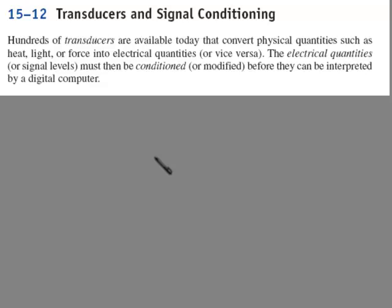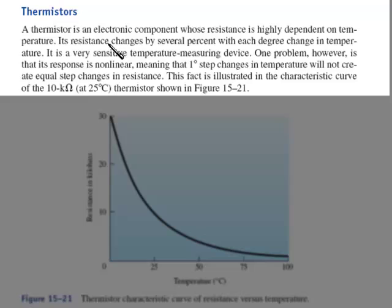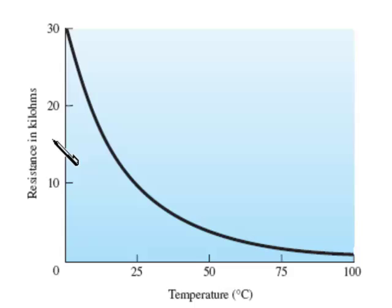So the first sensor we'll look at is the thermistor. This is an electronic component whose resistance is highly dependent on temperature. Its resistance changes by several percent with each degree change in temperature. It's a very sensitive temperature sensing device. One problem, however, is that its response is non-linear, meaning that one degree step changes in temperature will not create equal step changes in resistance. This fact is illustrated in the characteristic curve of the 10K ohm at 25 degrees C thermistor shown below. And you can see that as the temperature increases, the resistance drops, but it's not a straight line. It's a non-linear function.